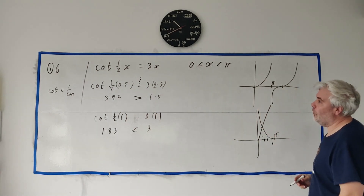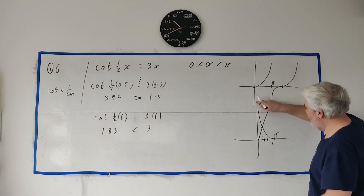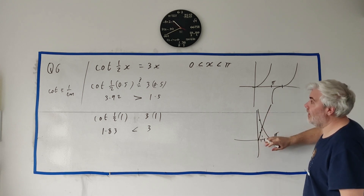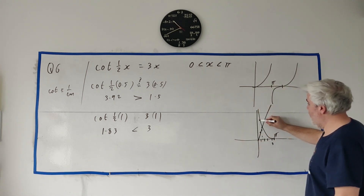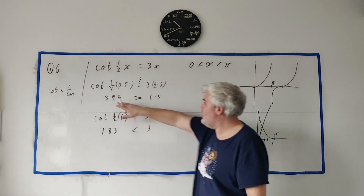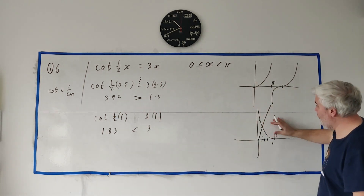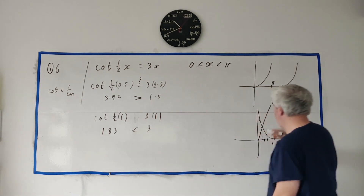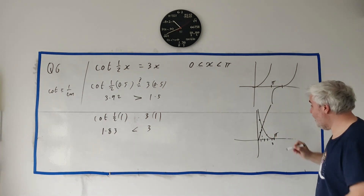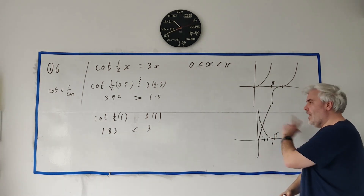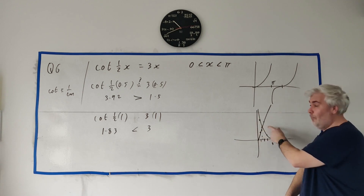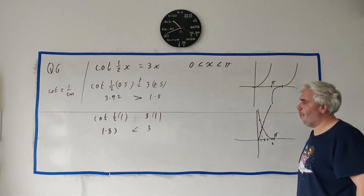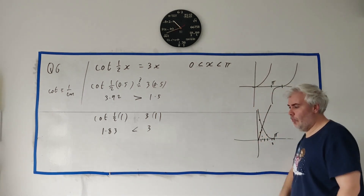Just graphically: at 0.5 the cotan (the curved line) is above 3x (the straight line), so cotan is bigger. Then at 1, 3x is bigger. That tells us they must cross somewhere between them. You can use any amount of English, even draw a little picture beside it. But I think the examiner will even take just these numbers right here. Let me clean this off and we'll do part B.